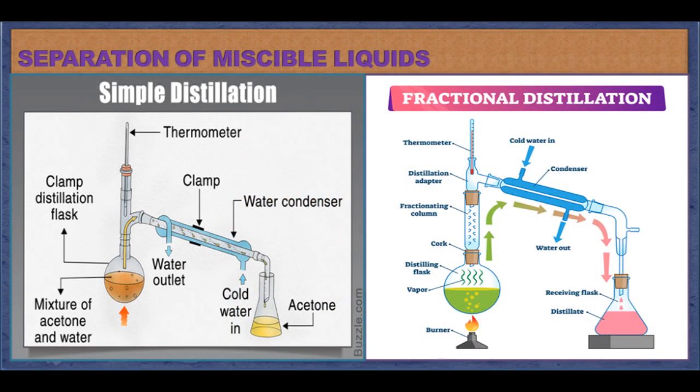Separation of miscible liquids. Miscible liquids can be separated by distillation. The mixture is heated at different temperatures — the liquid with the lower boiling point evaporates first, and its vapours are passed through a condenser where they cool and convert into liquid form. The other liquid remains in the flask. Distilled water, alcohol, petrol, diesel, gasoline, kerosene, paraffin and many other liquids are produced commercially by this method.